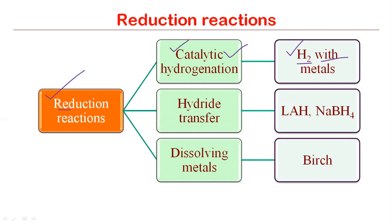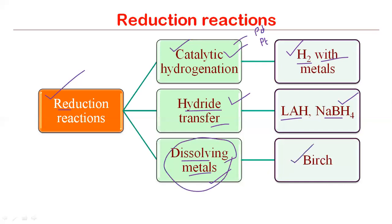We'll talk about Lindlar's catalyst where palladium is used, and Adam's catalyst where platinum is used — both are forms of catalytic hydrogenation. We have already discussed hydride transfer reduction reactions using lithium aluminum hydride and sodium borohydride. The third category of reduction is dissolving metal reductions, and the Birch reduction is a common example, which we'll cover in coming lessons.